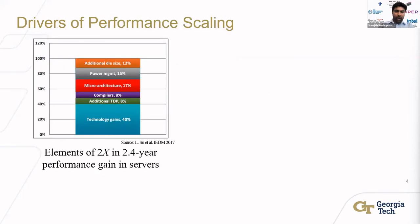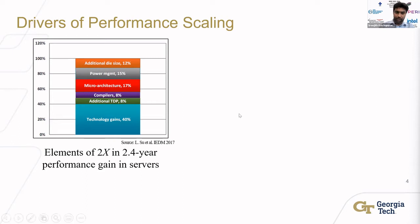As Dr. Swaminathan mentioned in the previous presentation, with the slowing down of Moore's scaling, performance enhancements over compute generations are no longer driven just by technology gains. Looking at this chart from AMD's Dr. Sue at IDM 2017, technology gains contribute to less than half of the generation-over-generation performance improvement. The rest comes from compiler improvements, power management, micro-architectural improvements, and notably, additional TDP and die size increases.